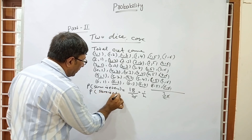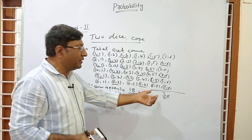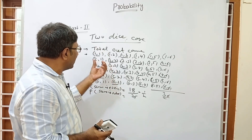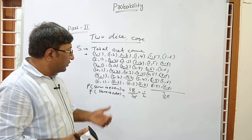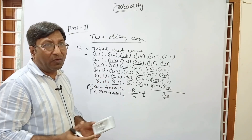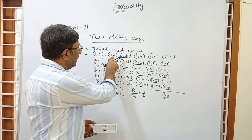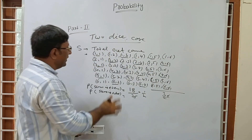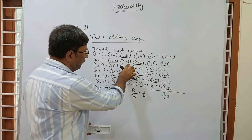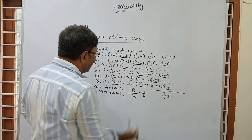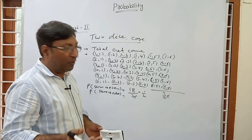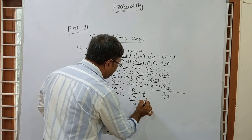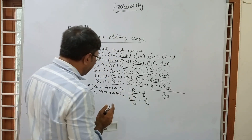In the same way, probability of sum being odd: among the 36 outcomes, there will be 18 pairs whose sum is odd. For example: 2+1=3 (odd), 2+3=5 (odd), and so on. So the probability of sum being odd is also 18/36 = 1/2.